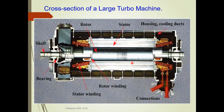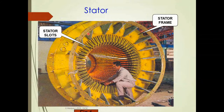This is a cross-section of a large turbo machine. Here you can observe the stator part and the rotor. Inside there is a rotor winding and this is the stator winding. This is the bearing, this is the shaft, this is the housing with cooling ducts, and these are the connections. See how large the machine is — these are the stator slots and this is the stator frame.